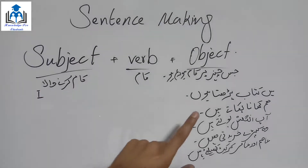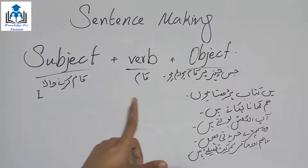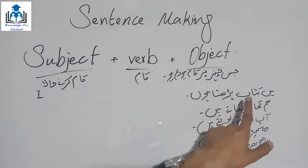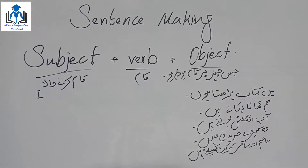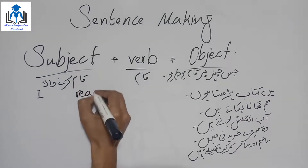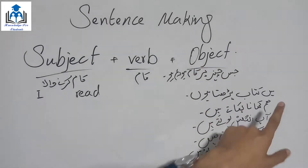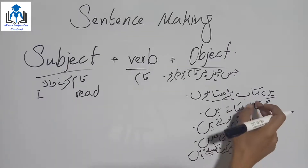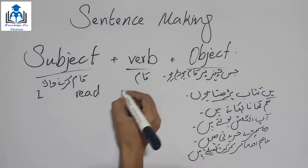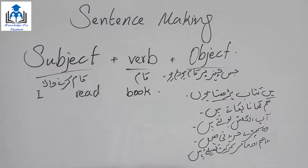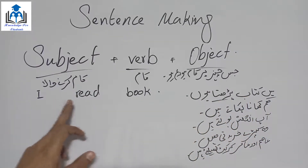Subject = 'I'. Now the verb: what do I do? 'پڑھتا ہوں' (read) — so 'read' comes second. Then the object: what am I reading? The action is on 'کتاب' (book) — so 'book' comes third. Therefore: 'میں کتاب پڑھتا ہوں' in English is → I read book.